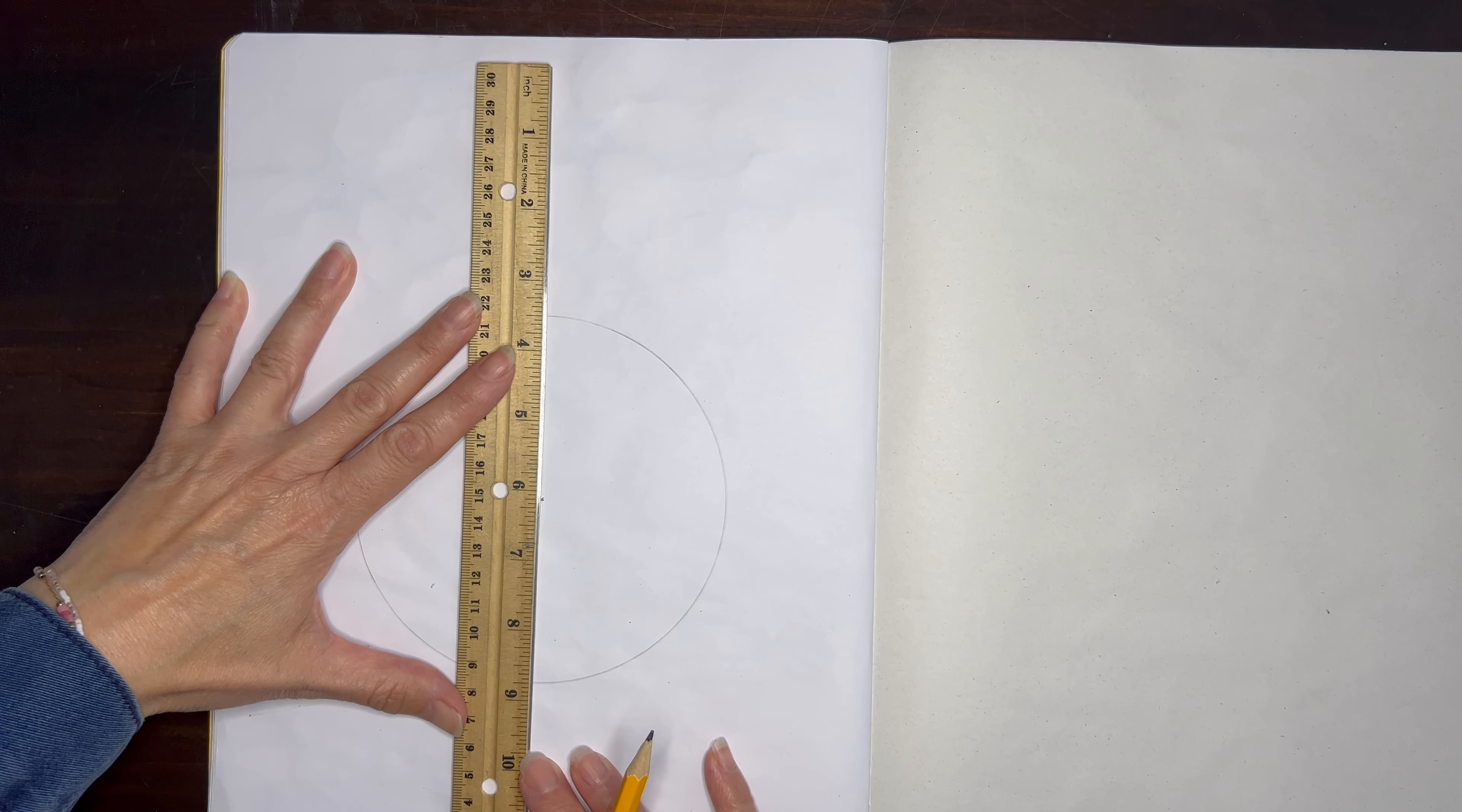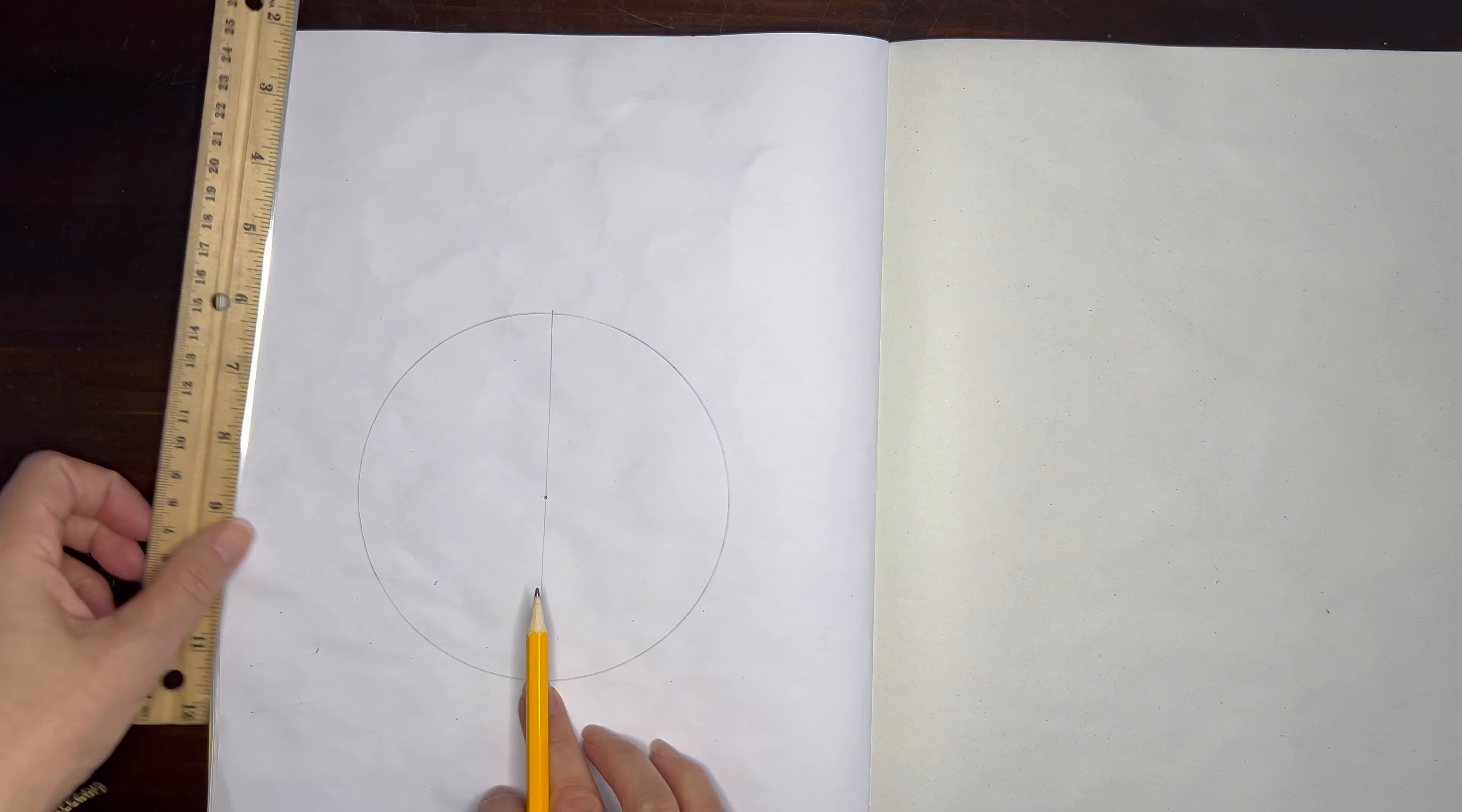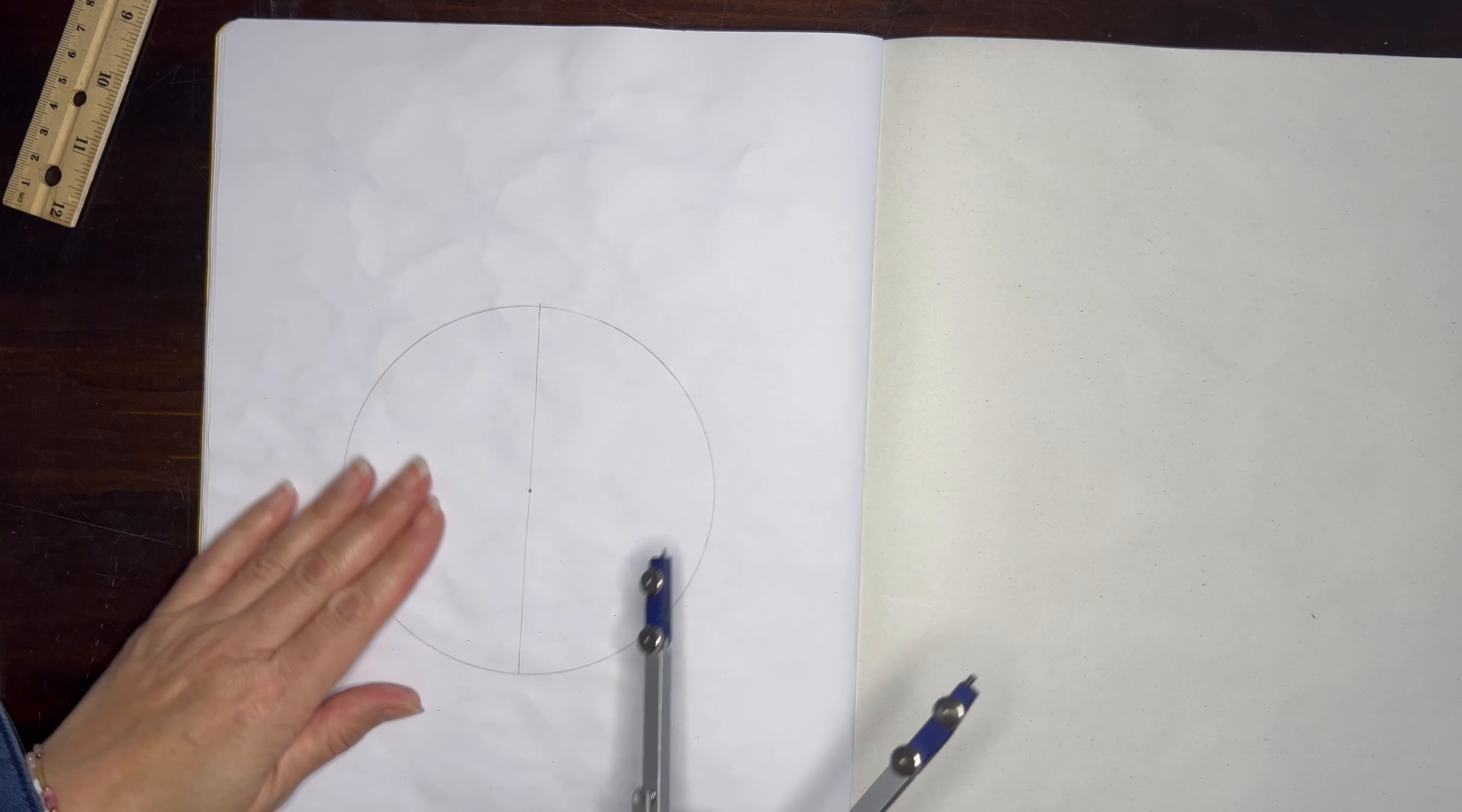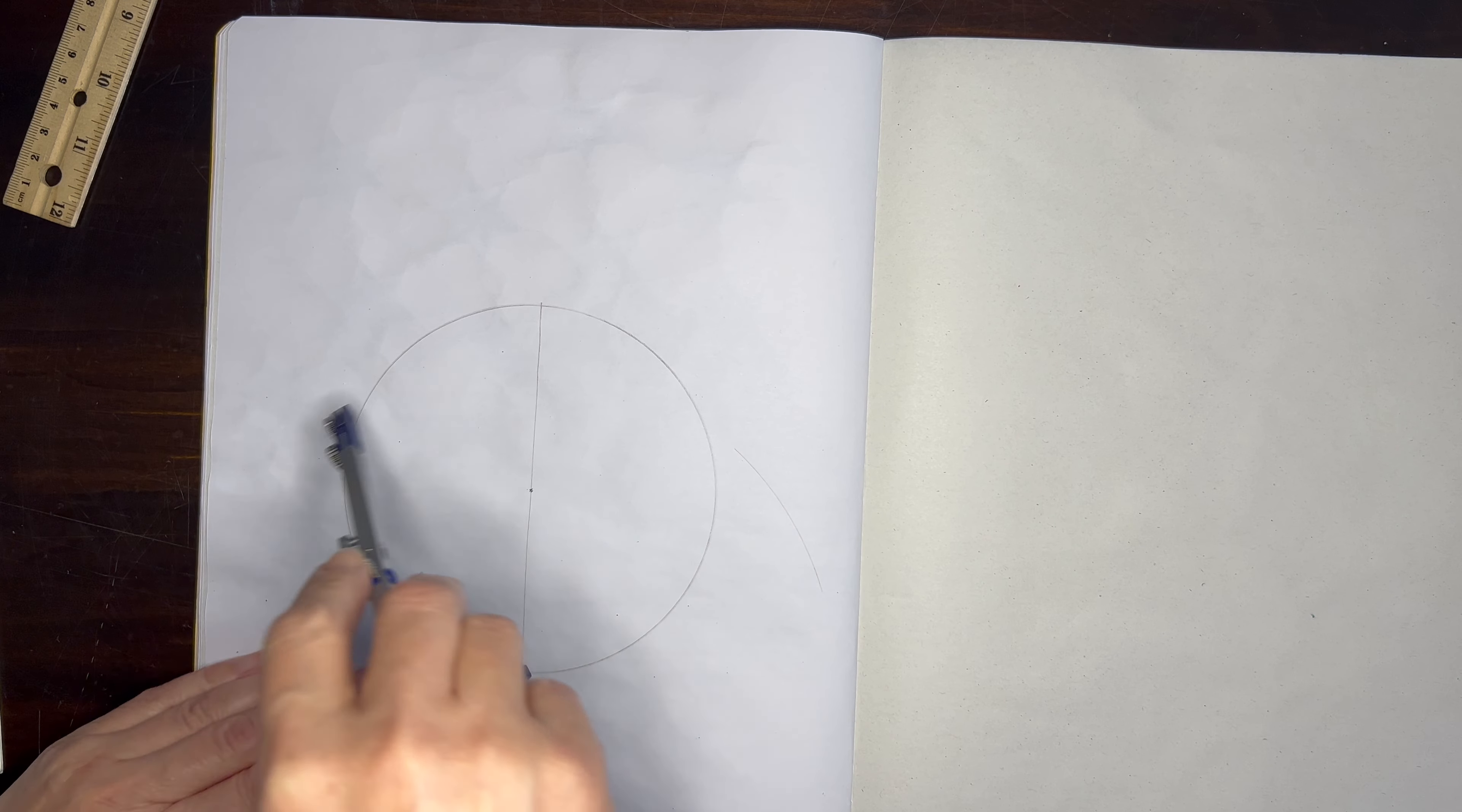Next I'm positioning my straight edge right through the center of the circle and drawing a line from top to bottom. Next I'm extending my compass so that it is much larger than the original radius. I'm going to set that compass at the bottom of my diameter and swing an arc to the right and left side.